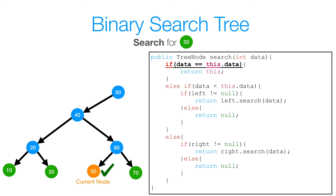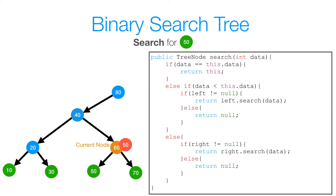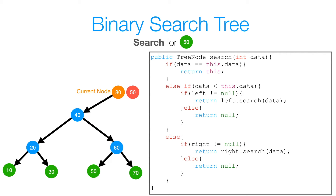Now we're back at the start of our method again. We check if 50 is equal to 50, and 50 is equal to 50. So at this point we can return a copy of the reference to our node with value 50 back to the method that called it, and so on until all stack frames pertaining to our search method are popped off the call stack. And we're done.